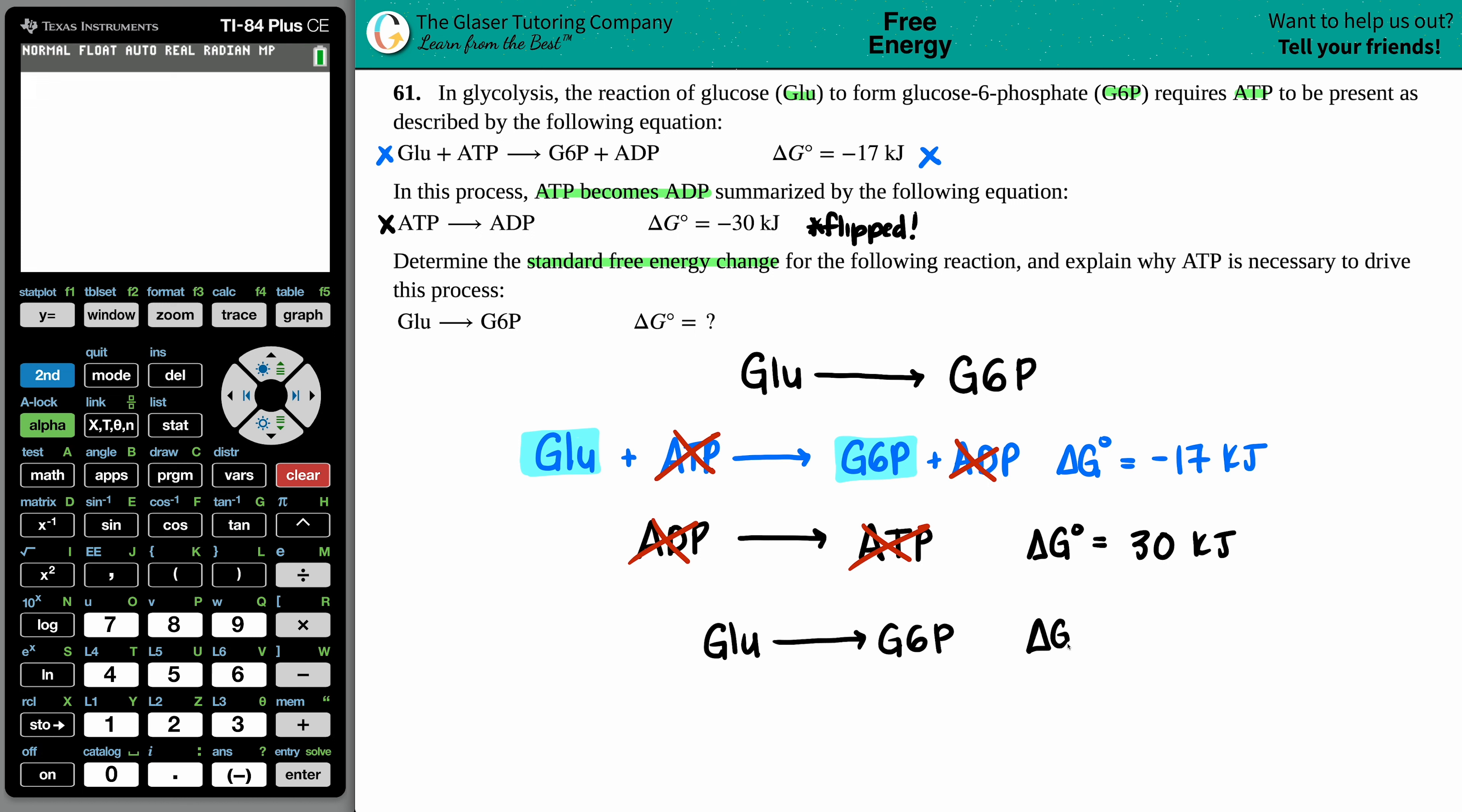And now to get that delta G value, which is what we wanted, you always will add your delta G values together. So basically it's negative 17 plus 30, or 30 minus 17. It does not matter. I'll just put it as this part just because that's what it says. Negative 17 plus 30 is a positive 13 kilojoules.